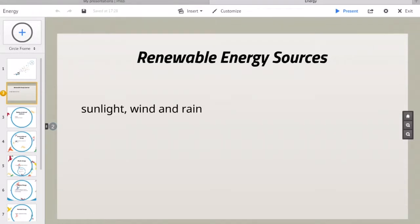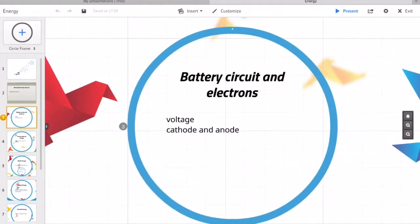On the other hand, examples of non-renewable resources are fossil fuels such as coal, petroleum, and natural gas.